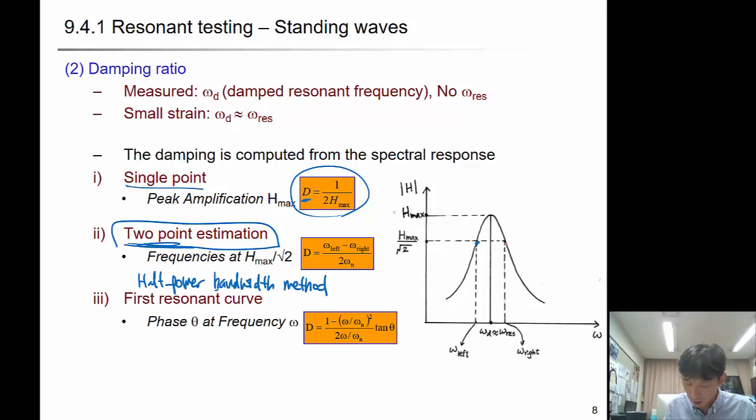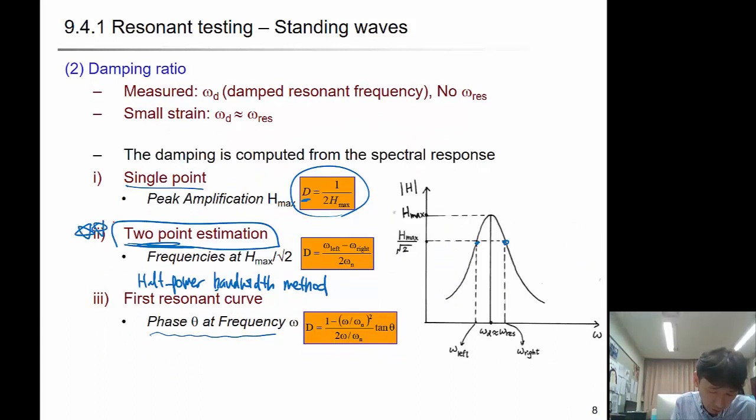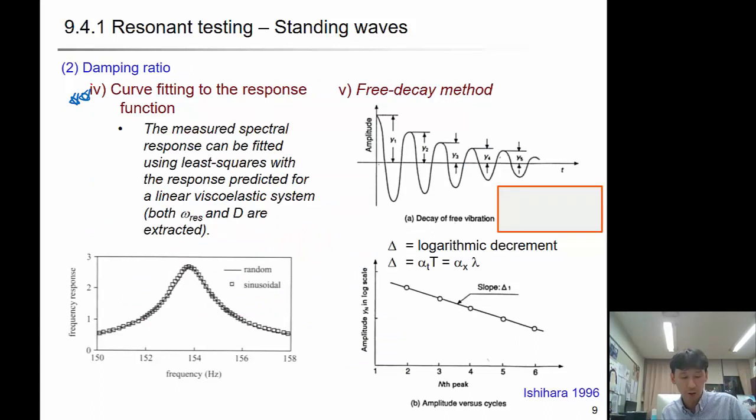The widely used method is called half power bandwidth method. This uses two points: omega on the left side and omega on the right side, divided by the natural frequency. You can also use resonant curve fitting. Alternatively, the next frequently used method is curve fitting to the response function. Using the transfer function H of the single degree of freedom system, you can fit the data with the curve and extract resonant frequency and damping ratio. The measured spectral response can be fitted using least squares with the response predicted for linear viscoelastic system.